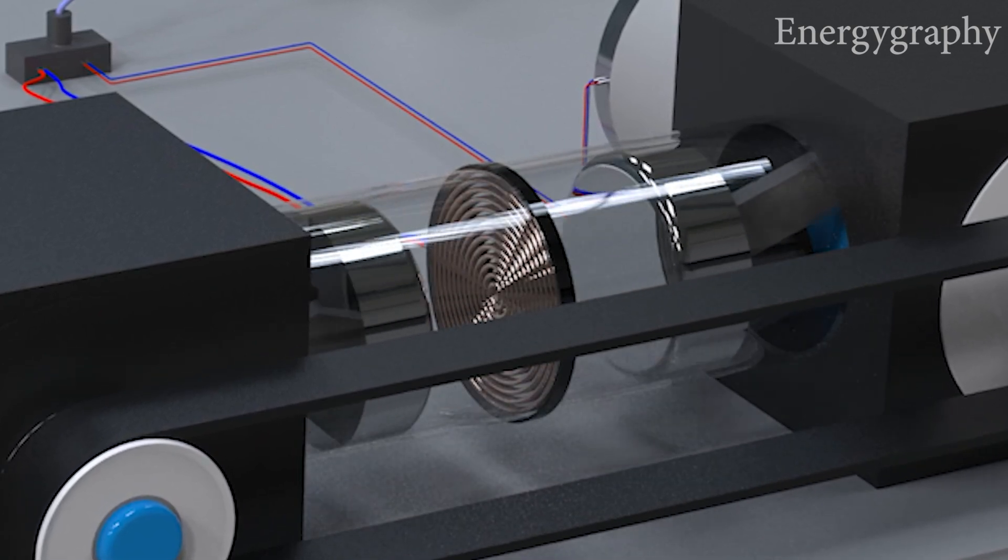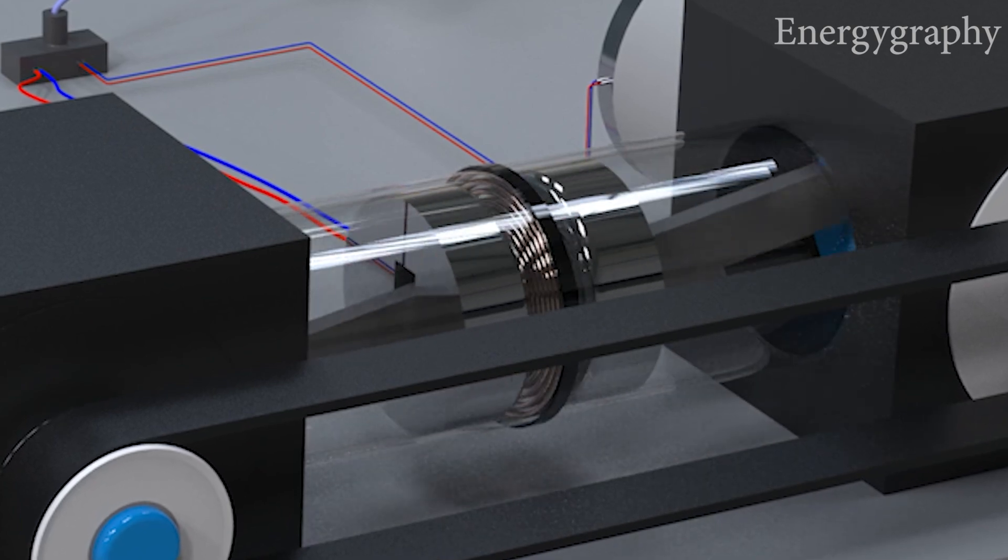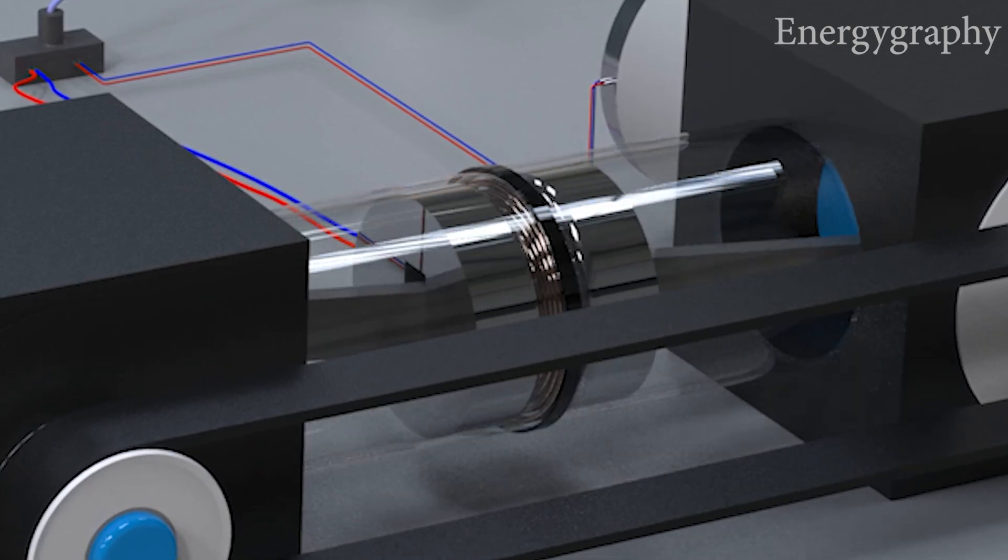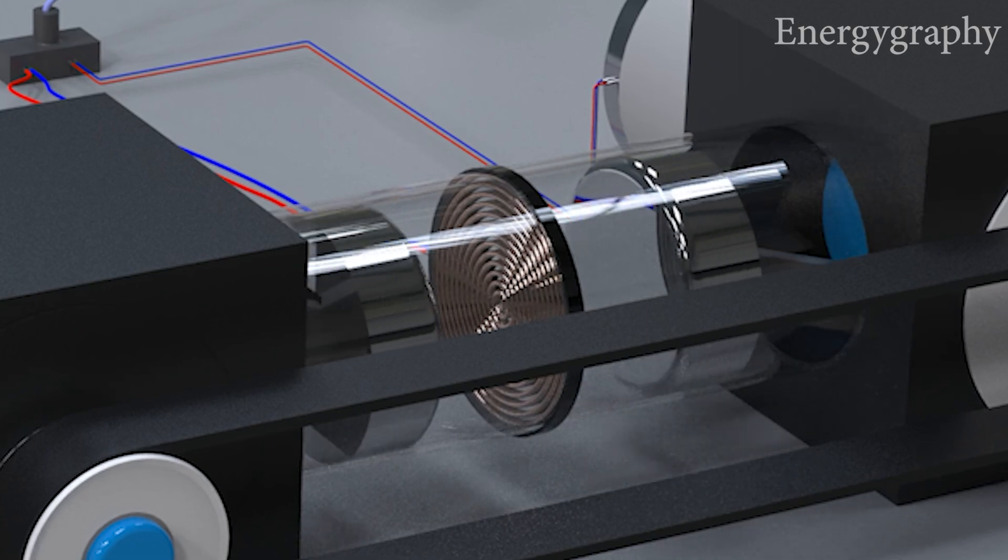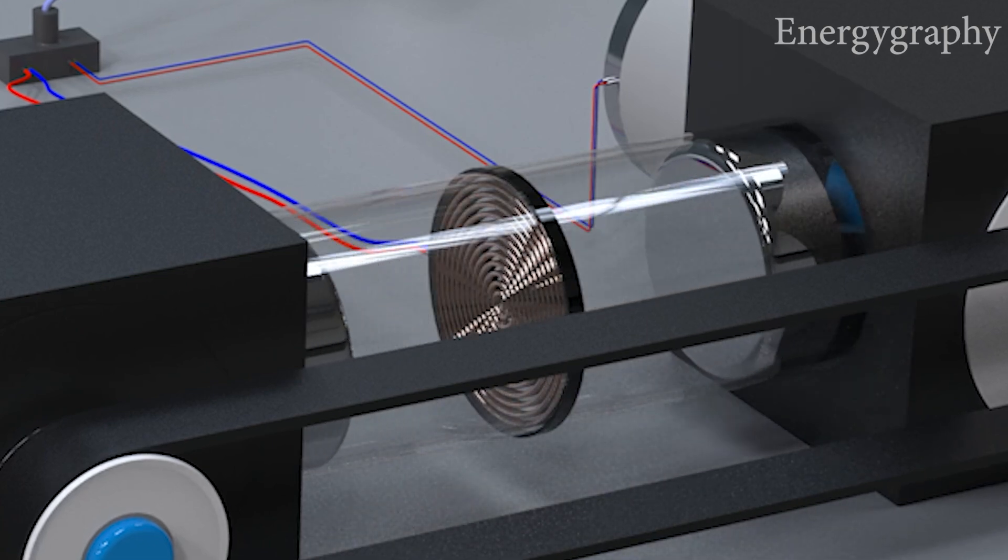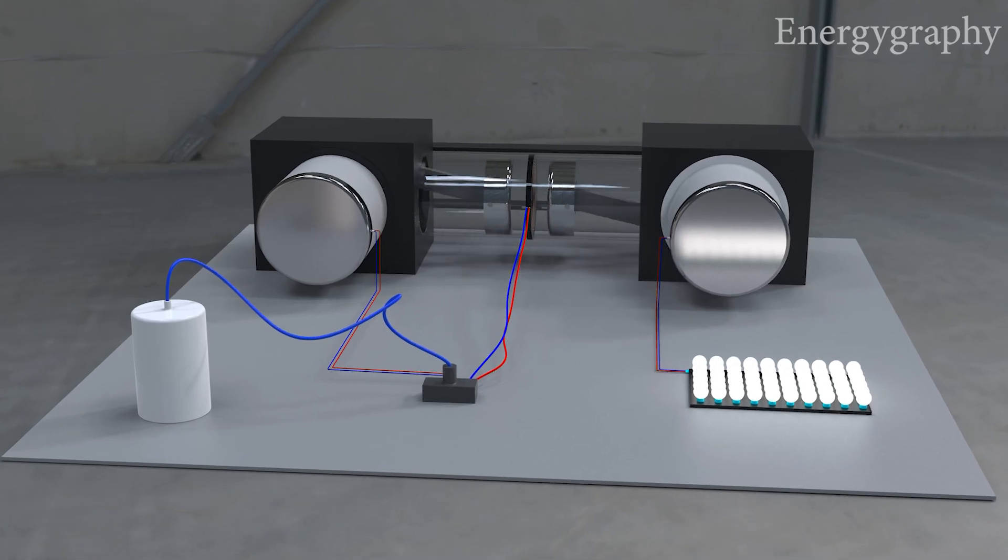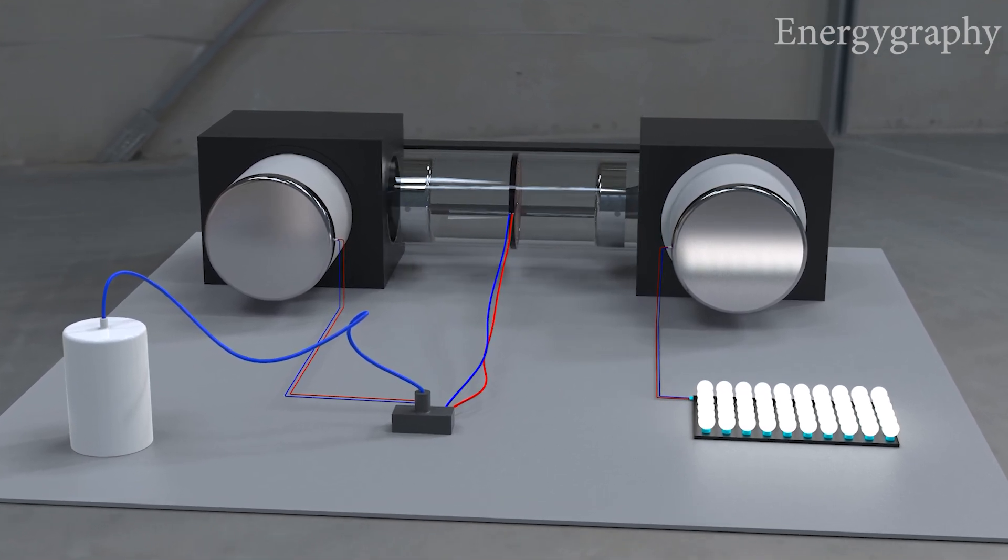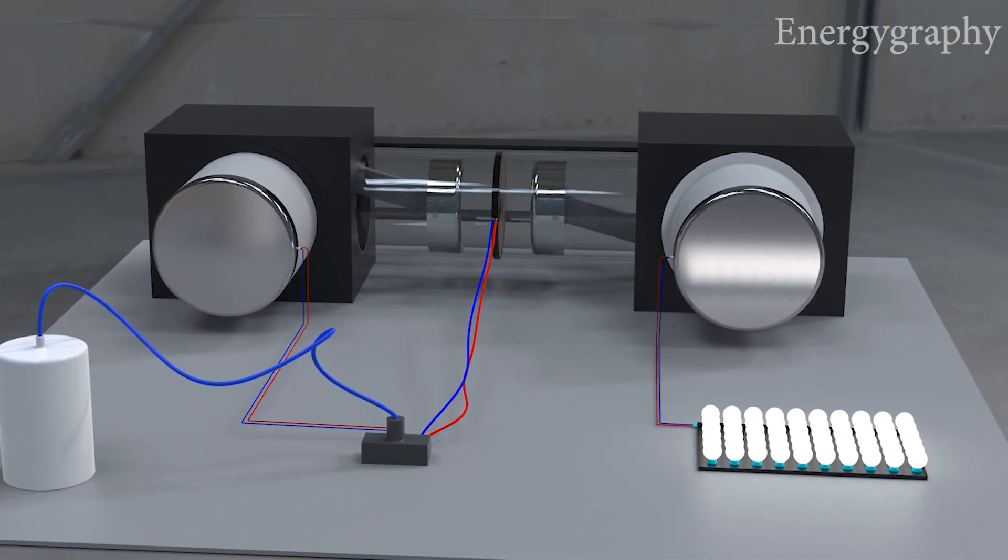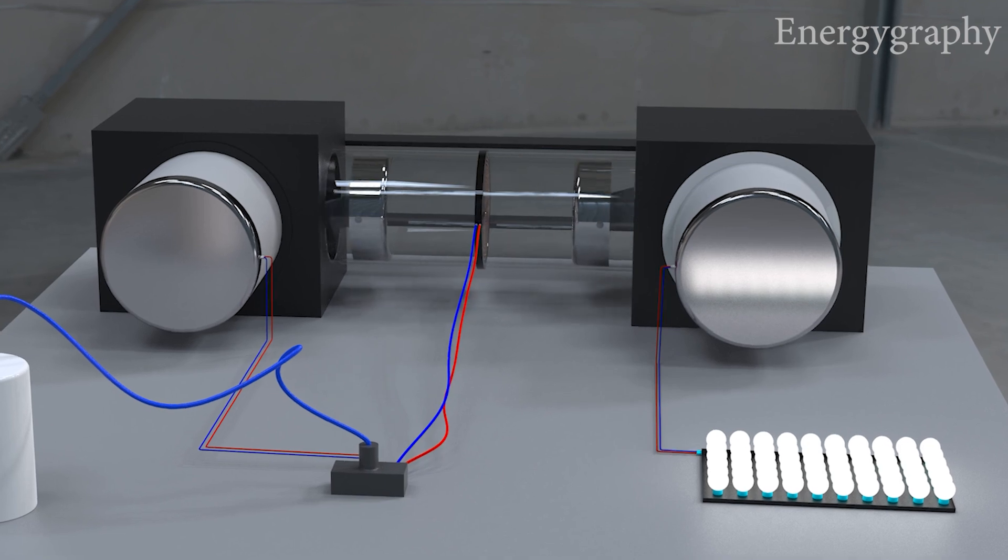And when the pistons reach the bottom dead center, the neutralizer is deactivated. The magnetic pistons attract each other and this cycle is repeated again and the generator turns on. The electricity generated by the first generator charges the capacitor and the second generator is used for output energy.